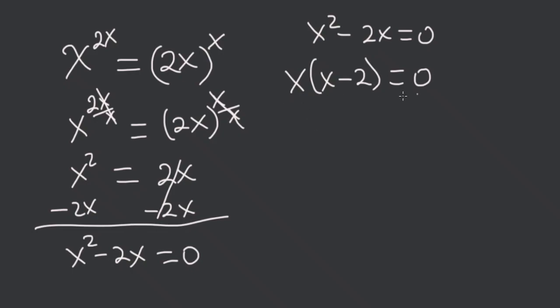So if I divide both sides here by x minus 2, I get that x is equal to 0.